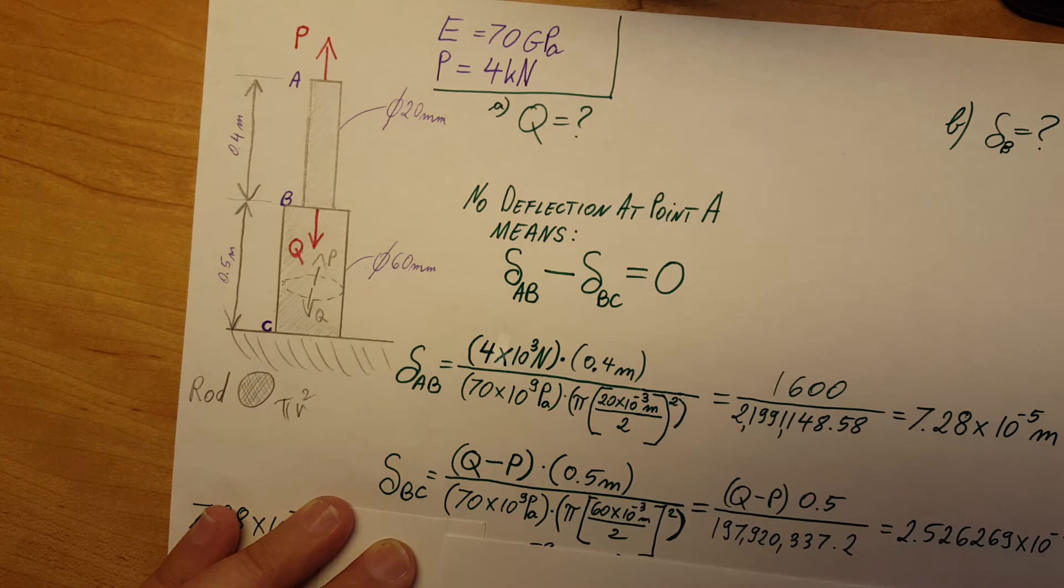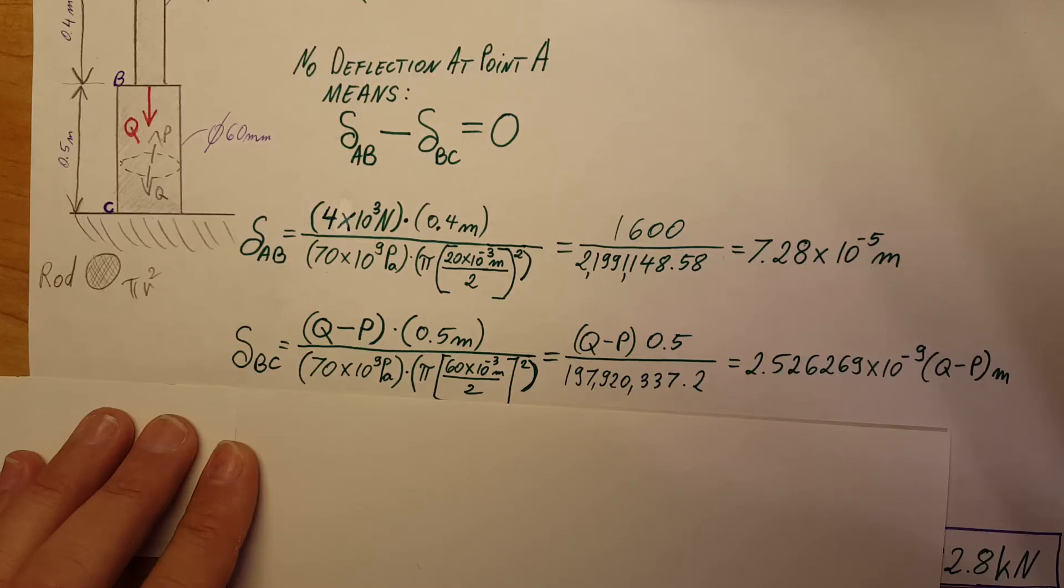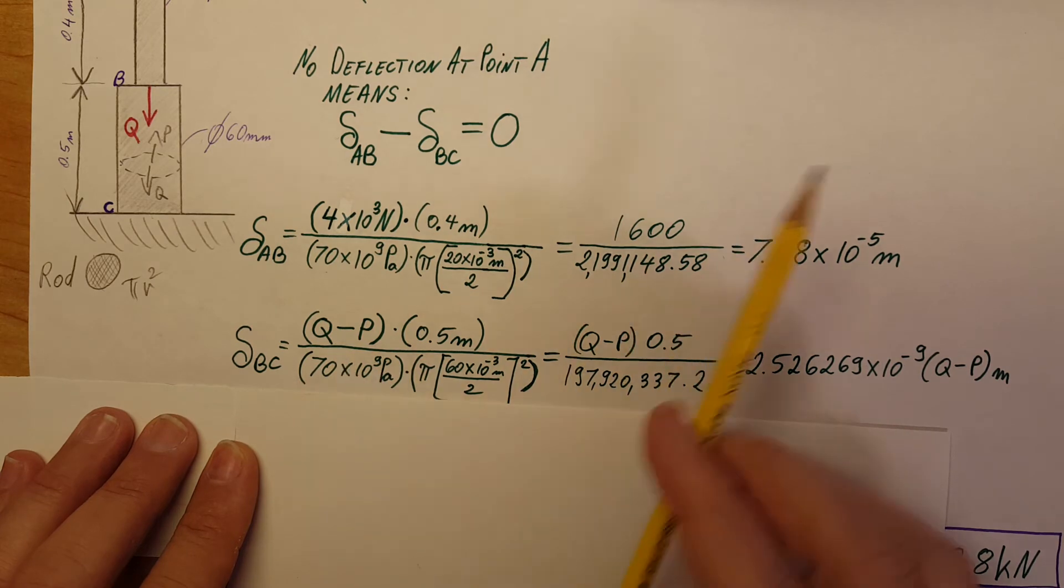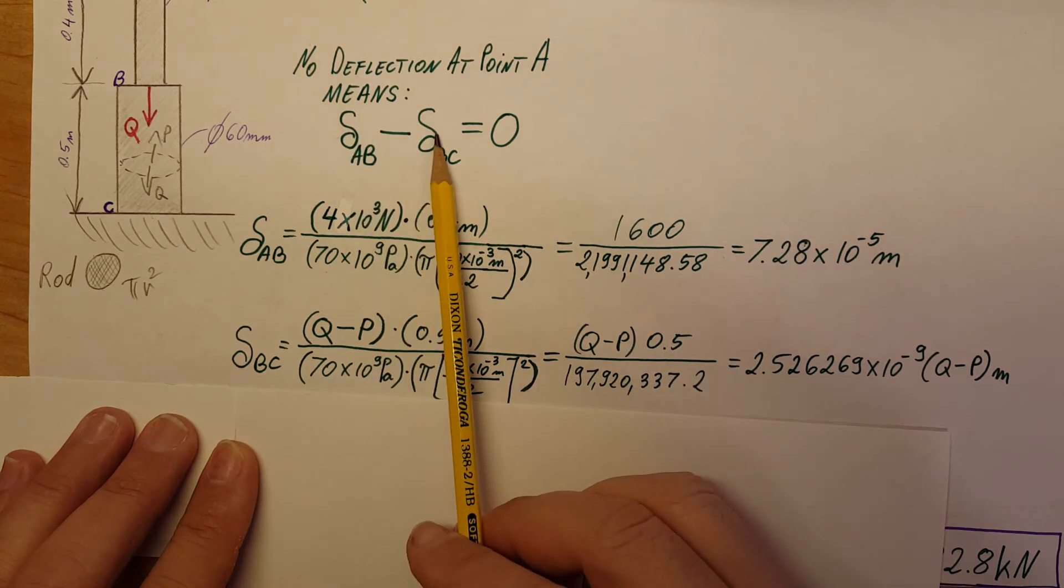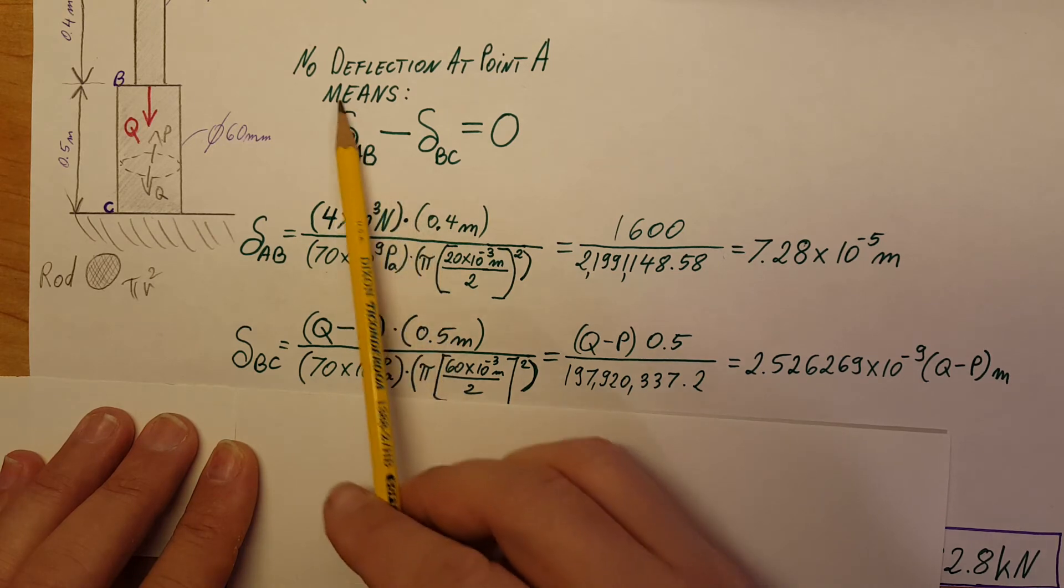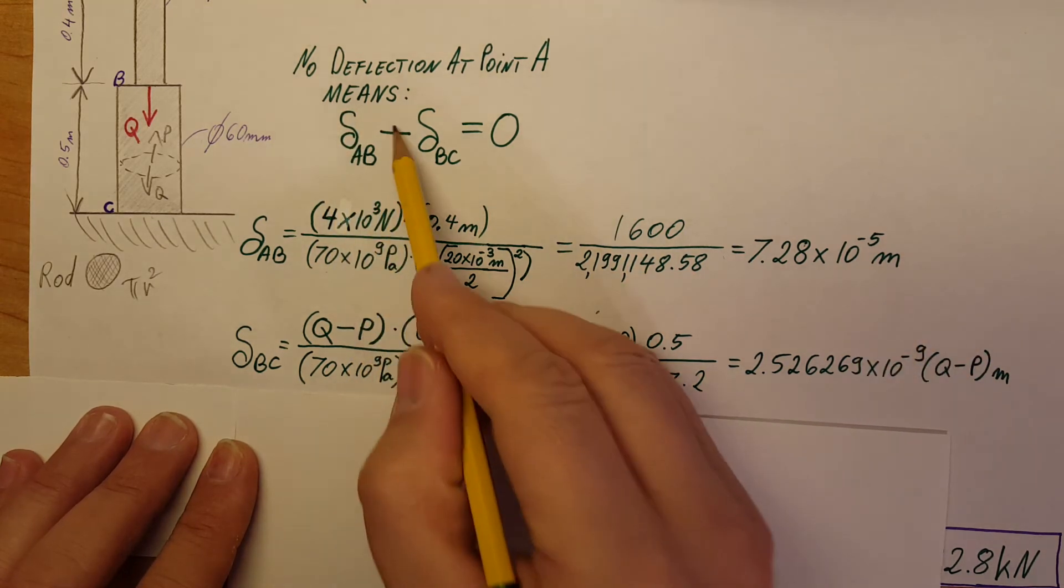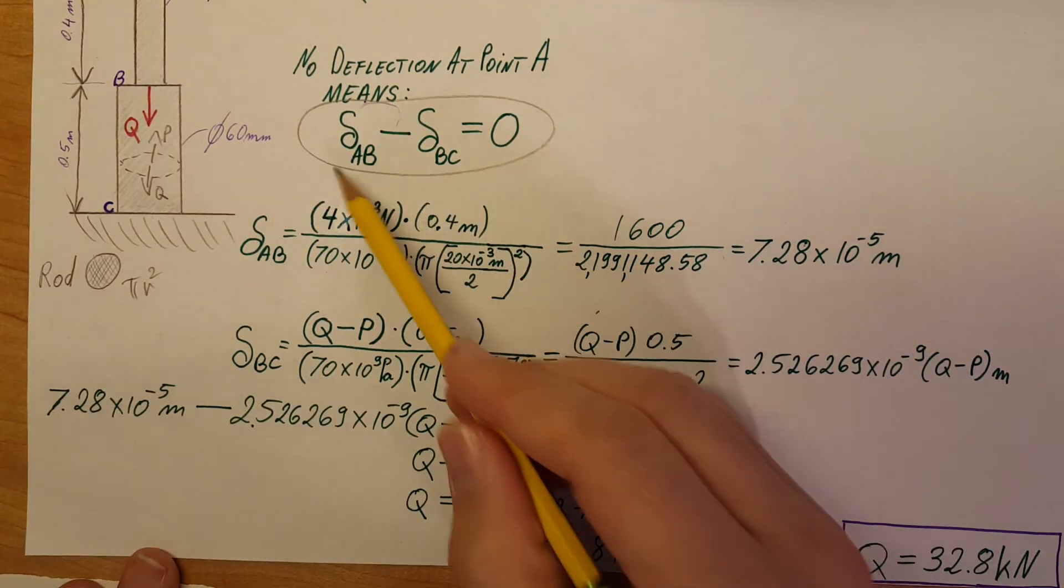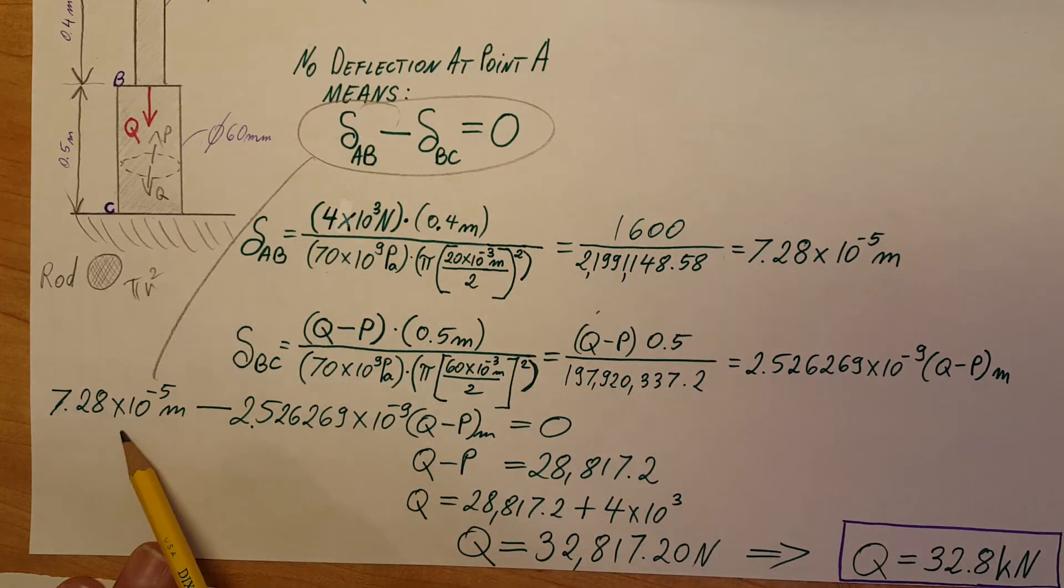Now we have this deformation, we have this deformation, both calculated, with only one variable left, which is Q. That's exactly what we want to find. So now we're gonna come back and use our equation that we set up.